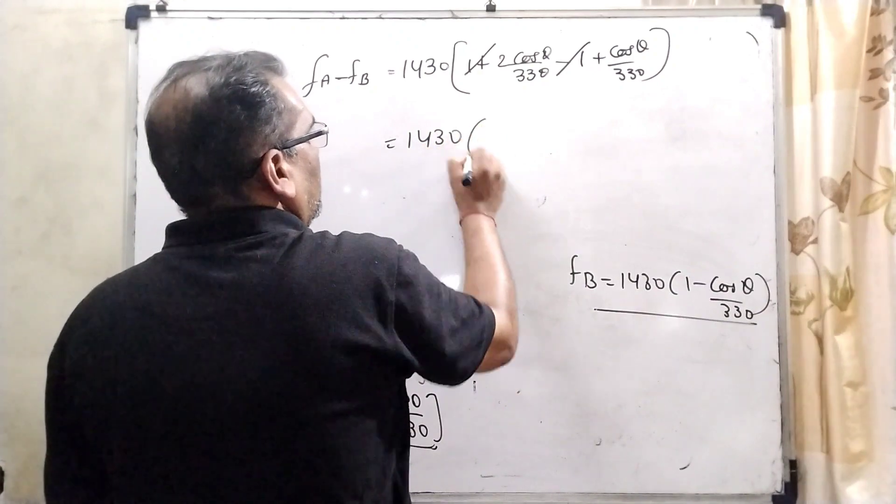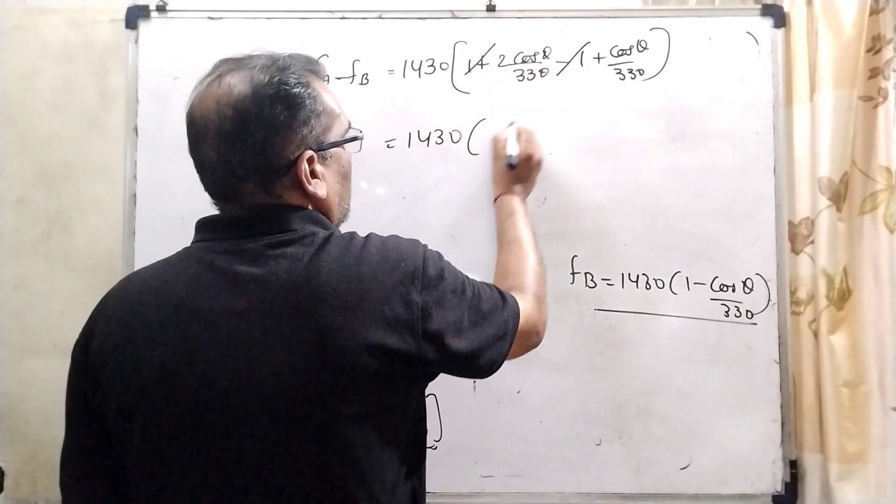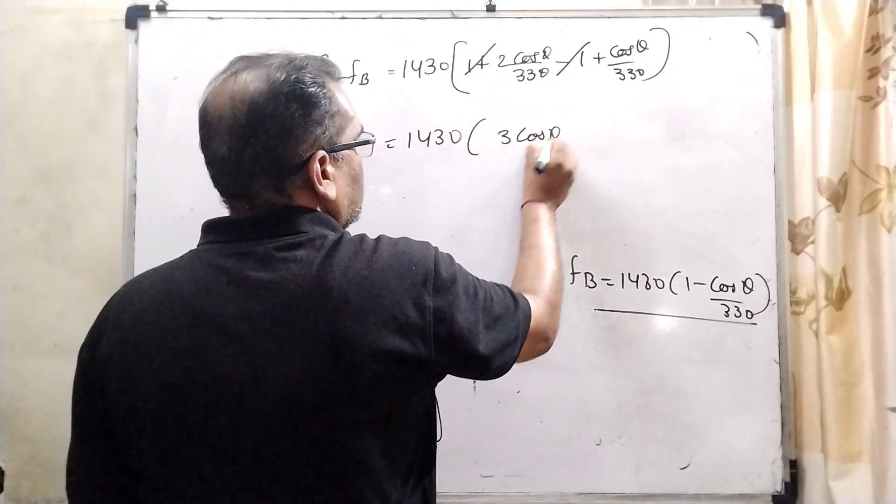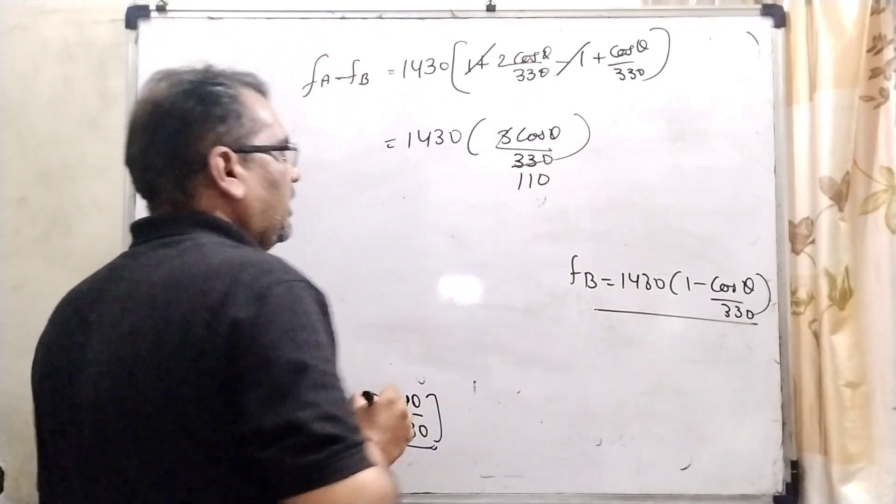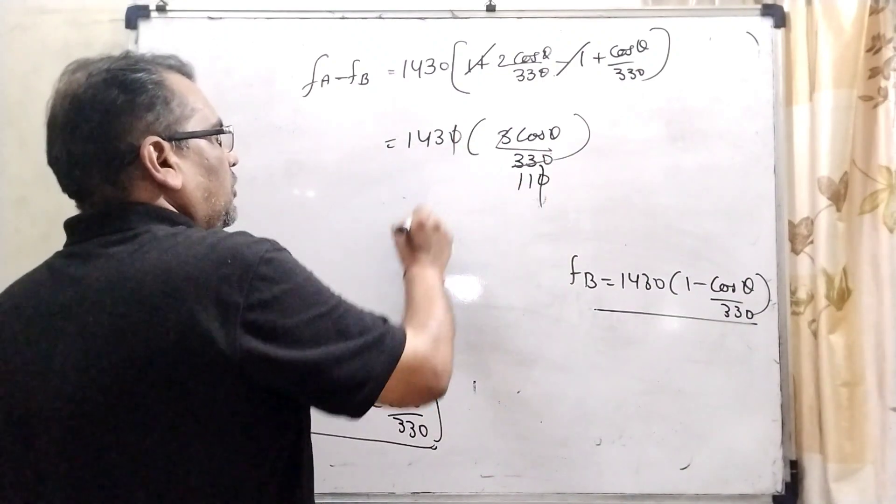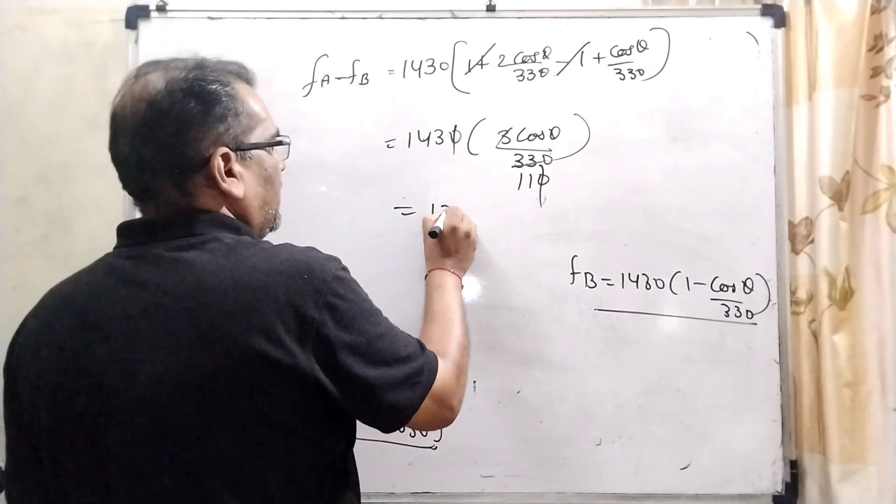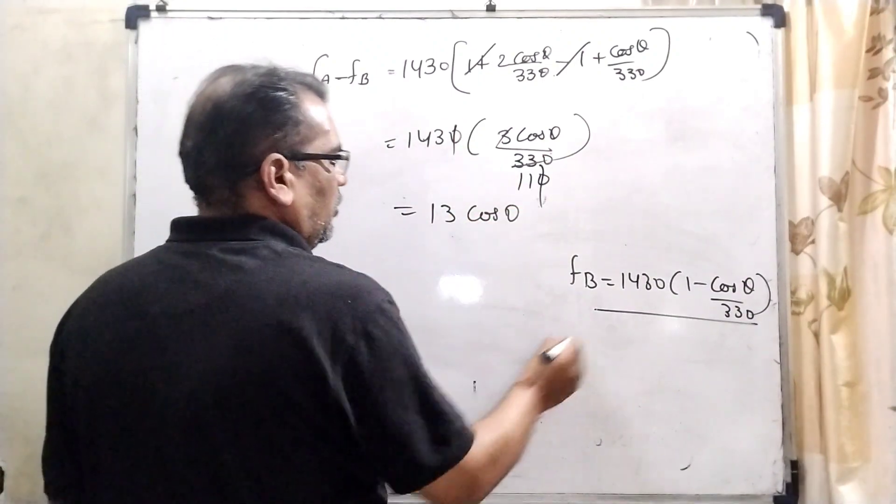Here, minus 1 plus 1 cancel out. 1430 and 2 cos θ plus cos θ, that is 3 cos θ because denominator is the same term. Here, 3 cancels out from 330, leaving 110. Its value is 13 cos θ.